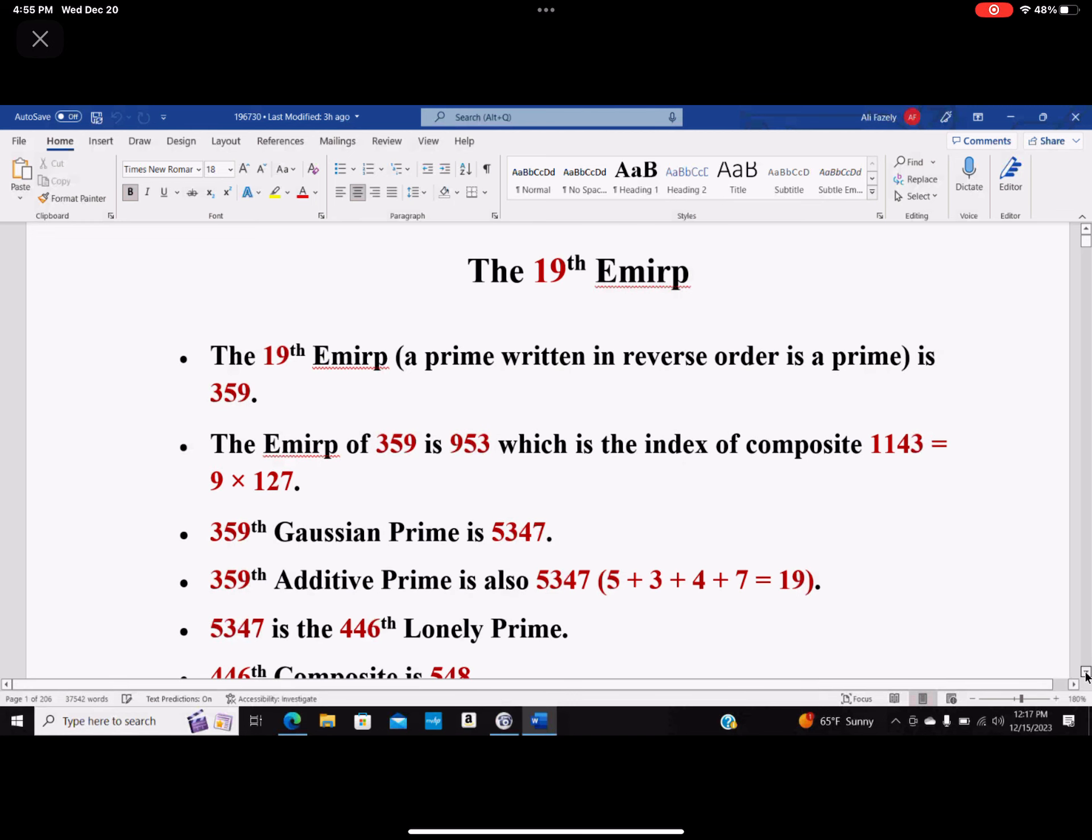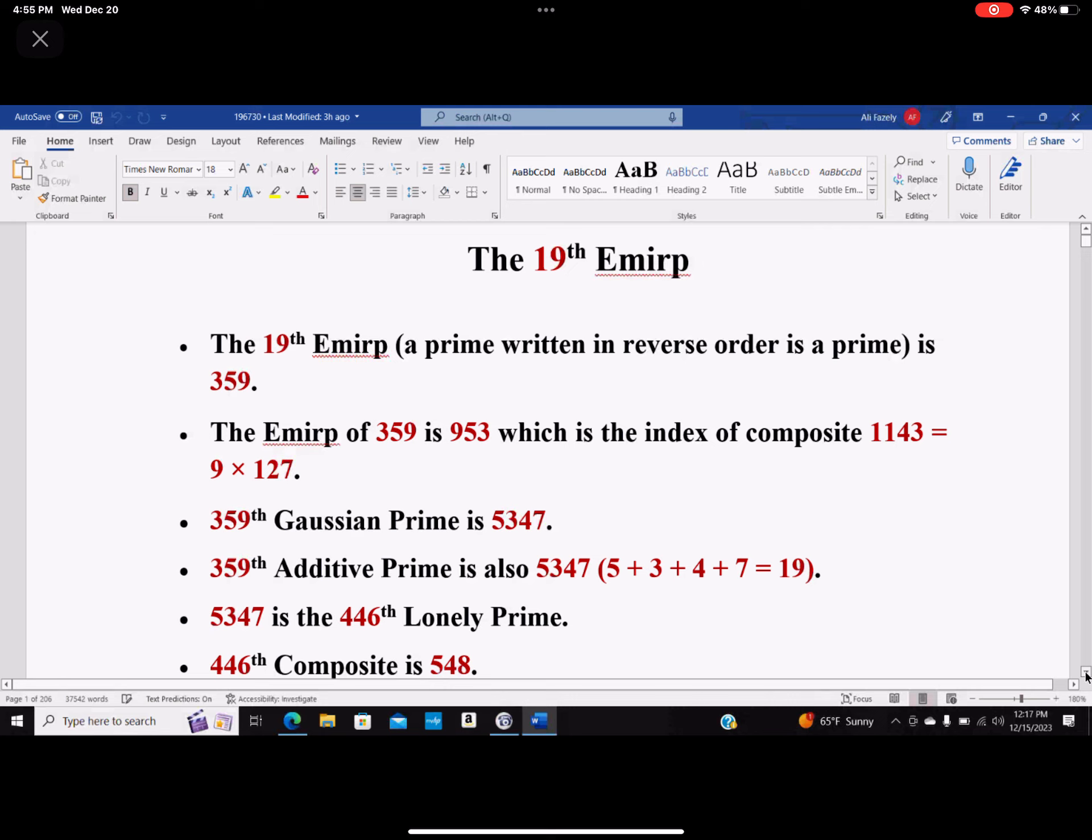Now, 359th Gaussian prime happens to be 5347. As you see here, I have it in the next bullet. 359 happens to be an additive prime, which means that the sum of the digits adds up to 19. So I put it in parentheses: 5 plus 3 plus 4 plus 7 equals 19. So that 19 is a prime number, so this is called an additive prime.